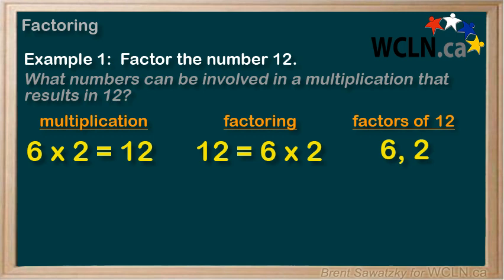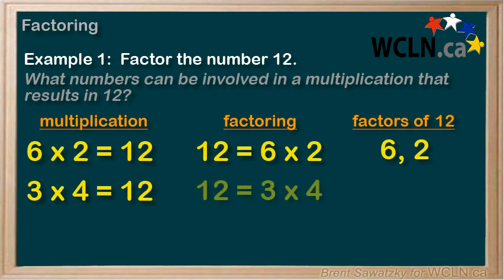Let's keep going — perhaps there are more factors of 12. Again, we think back to our times tables and we recall that 3 times 4 is also 12. So if we switch that around, we can show 12 factored: 12 equals 3 times 4, and we can list 3 and 4 as factors of 12.